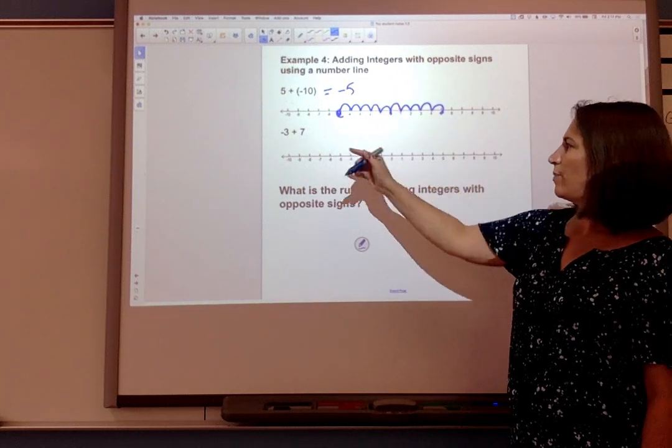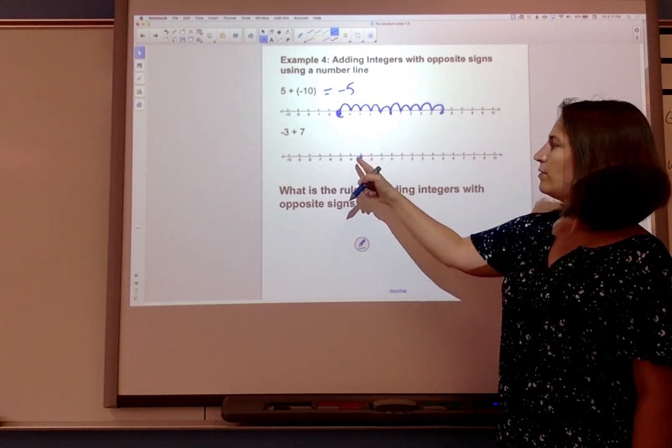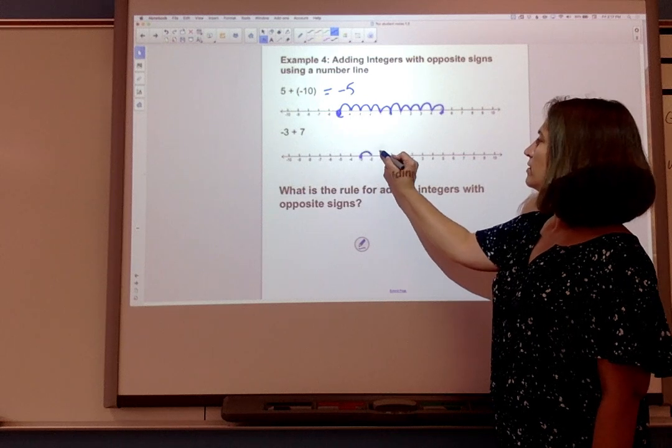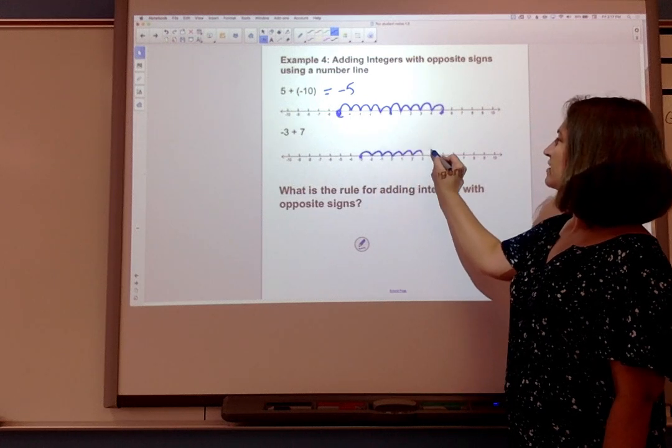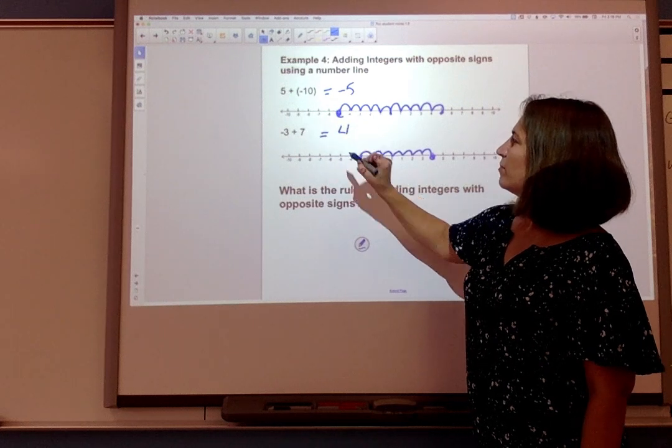Let's do our other problem. -3 is to the left of 0. I'm adding a positive so I'm moving to the right. 1, 2, 3, 4, 5, 6, 7. I'm going to end up at positive 4.